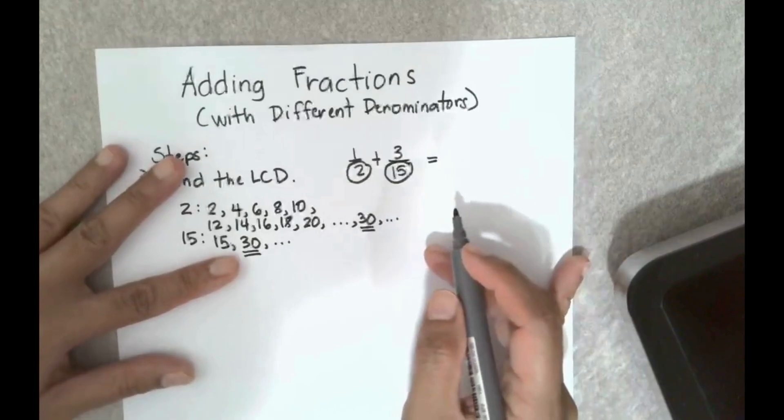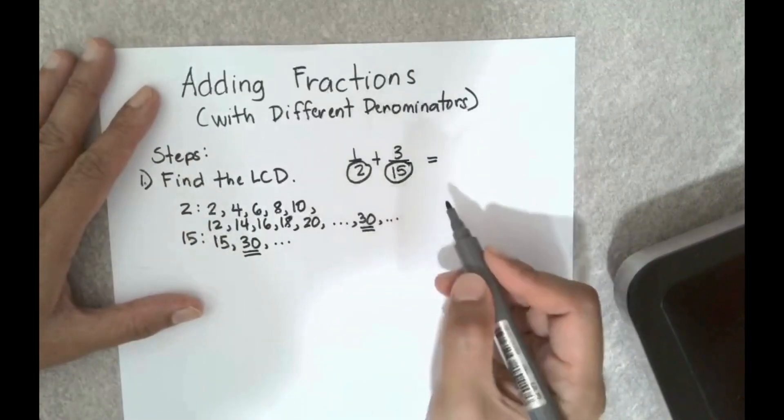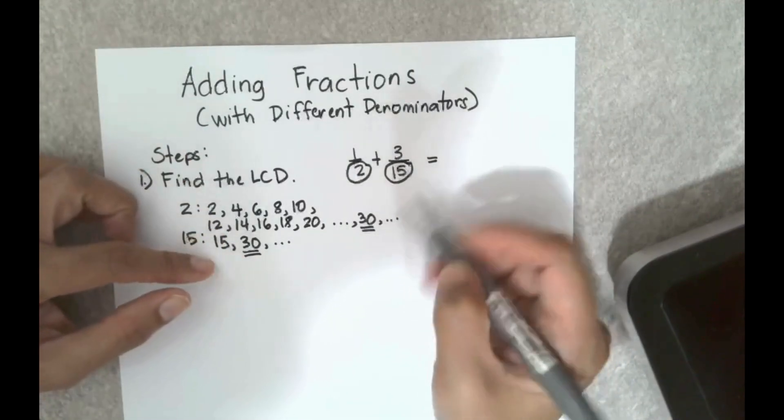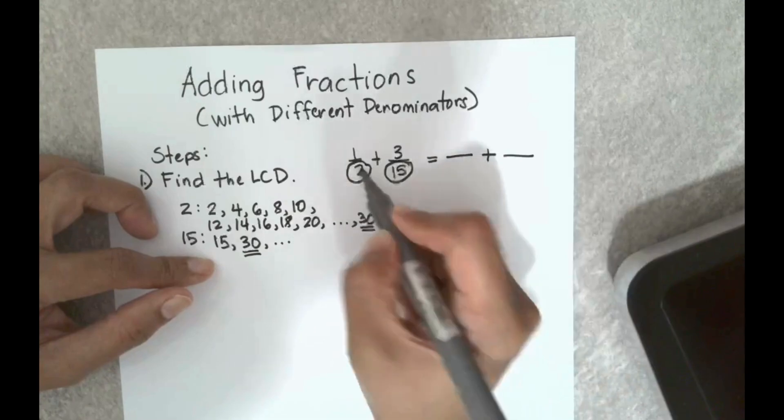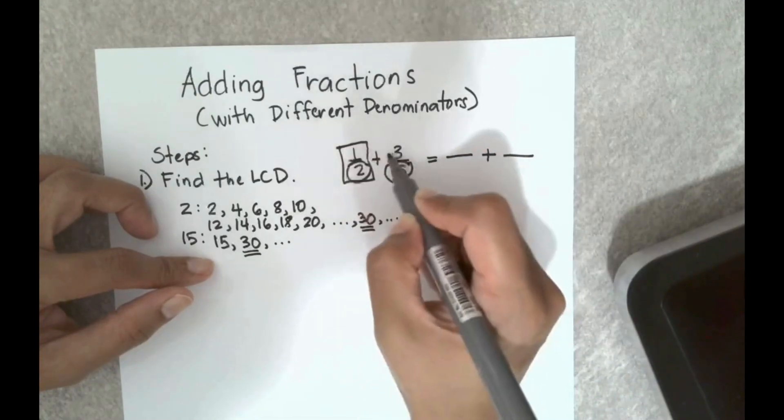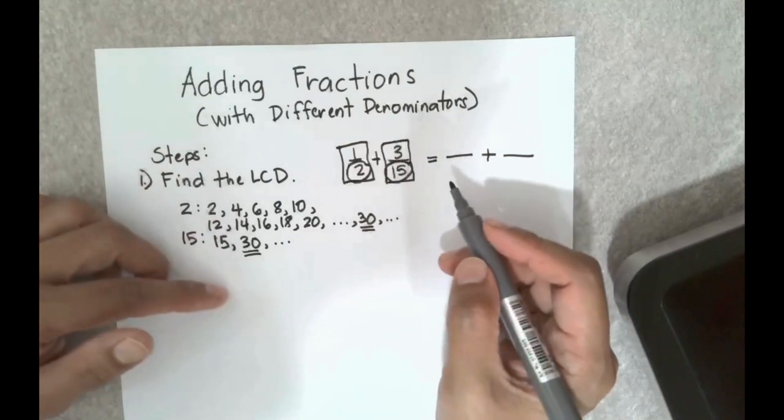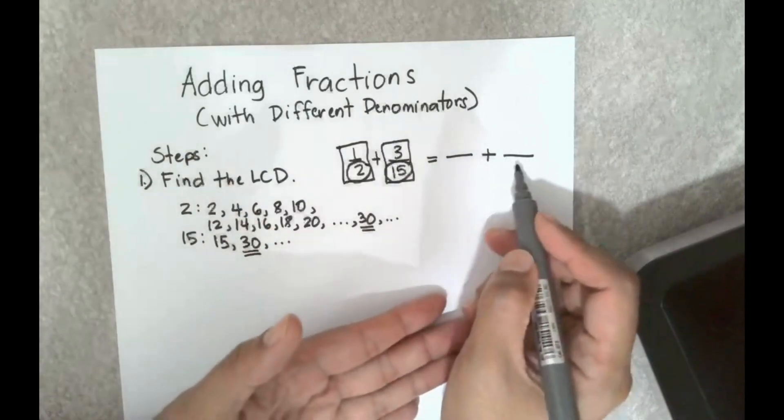So this can be expressed as fractions with denominators of 30. Just remember that these fractions have the same size as 1 half and the other one has the same size as 3/15. In other words these new fractions are going to be equivalent to the two original fractions.